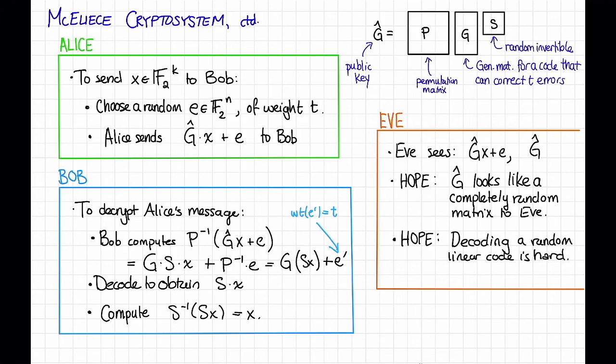We saw in a previous video that decoding a worst-case linear code is hard, it's NP-hard. So maybe it's not too much of a stretch to think that decoding a random one is also hard. We could hope that. If both of these hopes hold true, then it would be very computationally difficult for Eve to figure out X given this information. If we assume that Eve is limited to polynomial time algorithms, that is, Eve doesn't want to wait around for the heat depth of the universe in order to solve this problem, then this scheme is secure. Eve is not going to learn Alice's message.